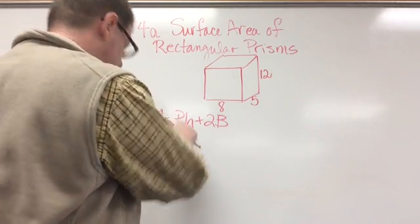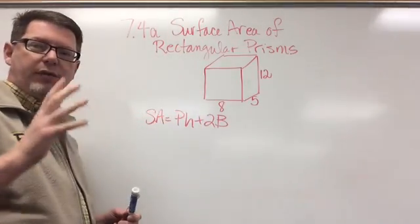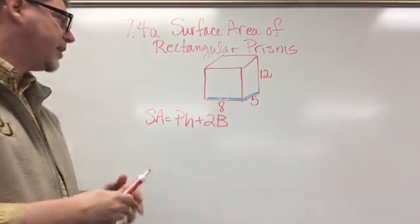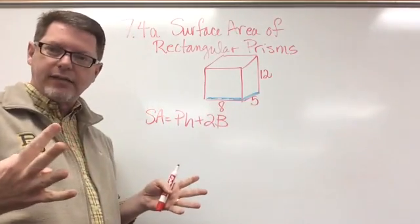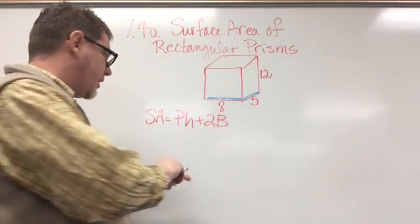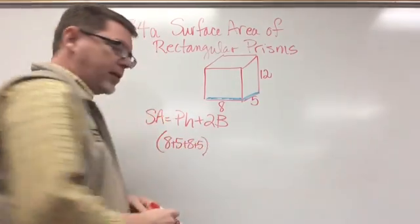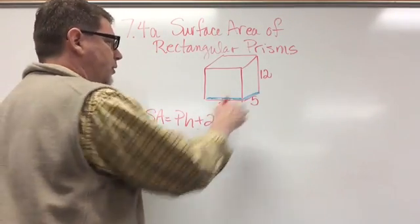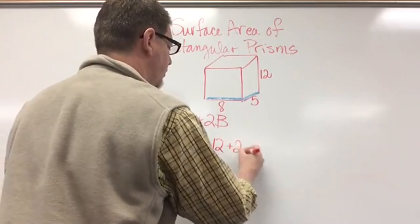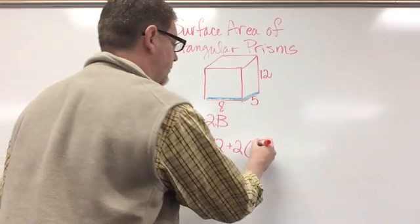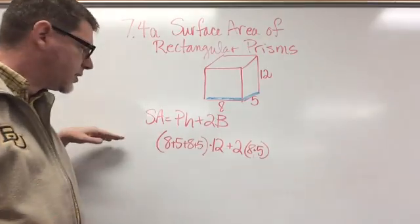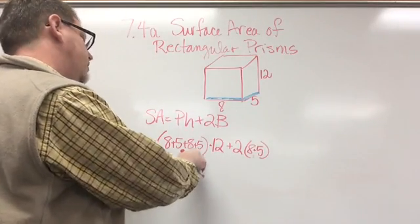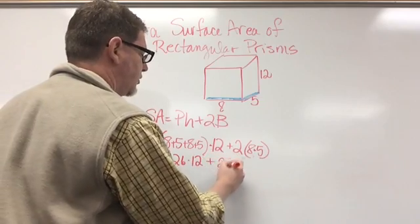I need to find the perimeter of the base. I'm going to highlight the base in blue. To find the perimeter of that base, I add all four sides together. I can only see two of them, so I know it's 8 plus 5 plus 8 plus 5. In parentheses: 8 plus 5 plus 8 plus 5, then multiply by the height, which is 12, plus 2 times the area of the base, which is 8 times 5. Plugging into the calculator: 8 plus 5 plus 8 plus 5 equals 26, times 12, plus 2 times 40.